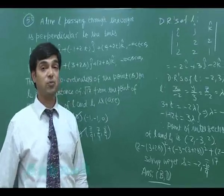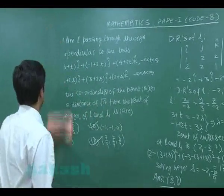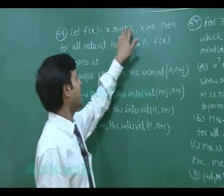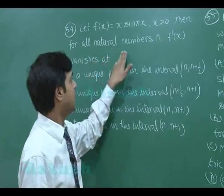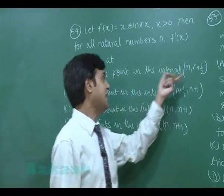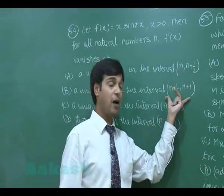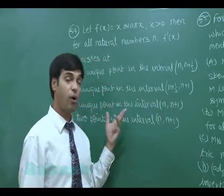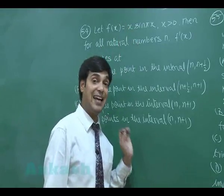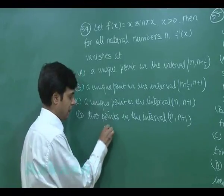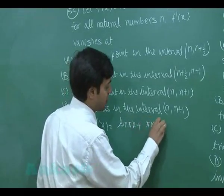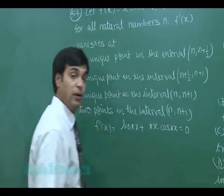Let's go to question 54. Let f(x) = x·sin(πx) where x > 0. For all natural numbers n, f'(x) vanishes at which of the following intervals: (n, n+½), (n+½, n+1), (n, n+1) — whether one solution or two solutions. Finding f'(x): f'(x) = sin(πx) + πx·cos(πx) = 0.